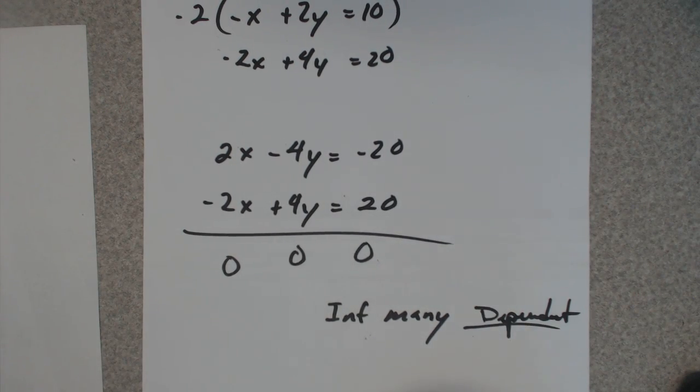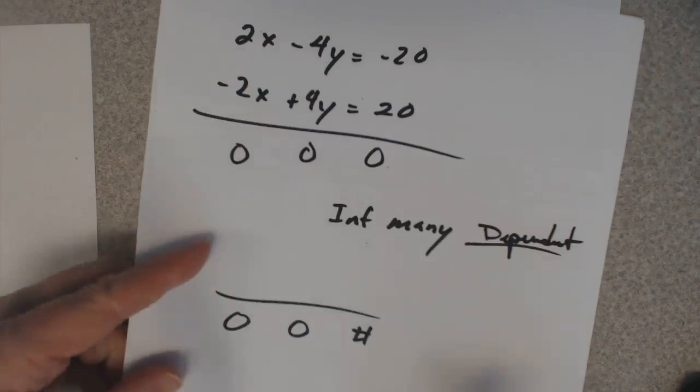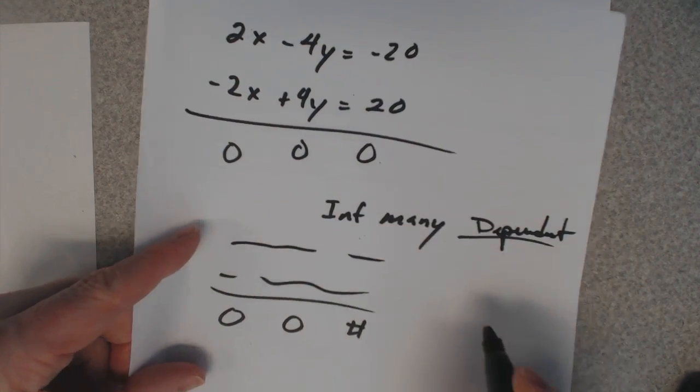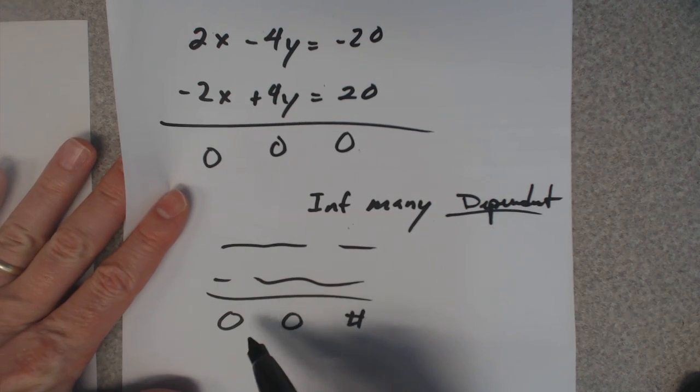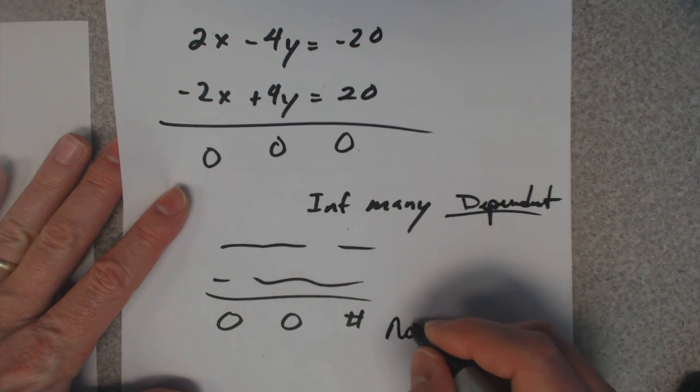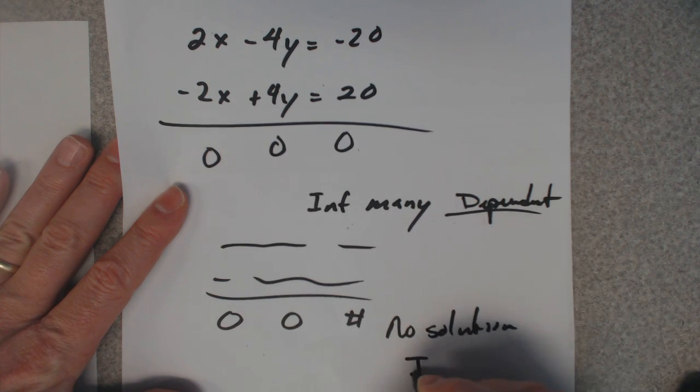If you had added those together, you got 0, 0, and then a number, that's what I mean. Like you got 2, 2, or whatever your equations are, add them together, you'll know that's no solution or inconsistent.